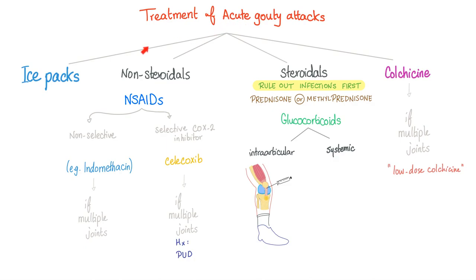For treatment of acute gout: ice packs for pain and inflammation. NSAIDs such as indomethacin — a non-selective COX inhibitor — or celecoxib, a selective COX-2 inhibitor. Use indomethacin or celecoxib for multiple joints; celecoxib is also preferred if the patient has a history of peptic ulcer disease because it only inhibits COX-2 and is gentler on the stomach. For steroids, rule out infection first — that's why we do arthrocentesis. Prednisone or methylprednisolone are the options, either intra-articular or systemic. For colchicine with multiple joints, use low-dose colchicine.